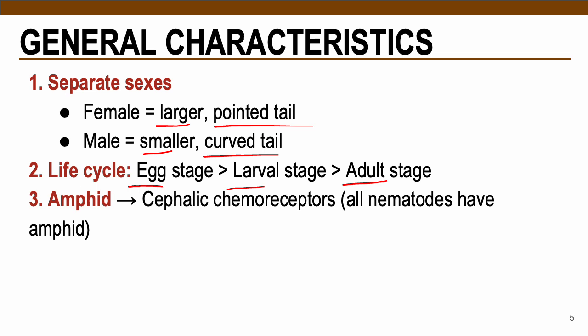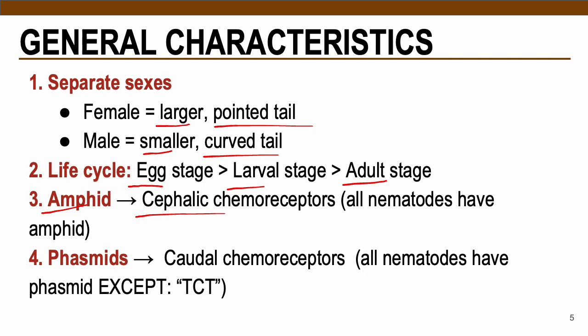Nematodes also contain chemoreceptors. Since these are worms, they do not have eyes and other senses, so chemoreceptors help them navigate and detect chemical signals in their surroundings. For amphids, these are cephalic chemoreceptors located anteriorly — at the anterior portion of the worm. Remember: all nematodes have amphids.